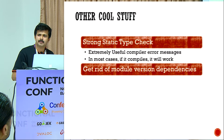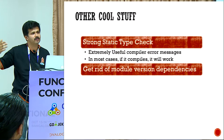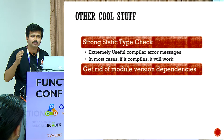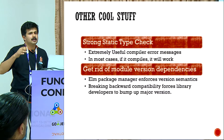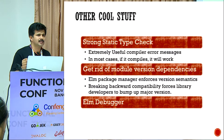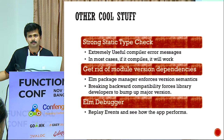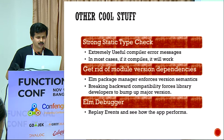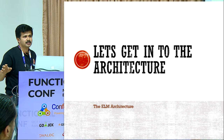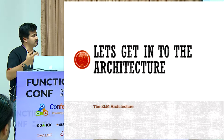Another important thing is module version dependencies. If you're using a third-party module and they release a newer version with a breaking change, Elm will force them to upgrade the major version. So you're guaranteed that if you declare dependencies in your Elm package JSON, it's going to work — no cross-version dependency issues. And finally, the Elm debugger literally lets you go back and replay all the events through the lifecycle of your app. This is a quick intro to syntax so you can at least read the code.